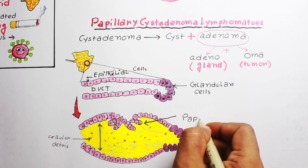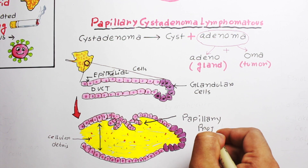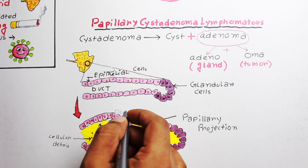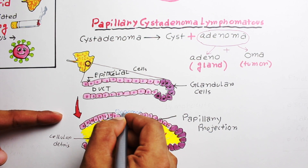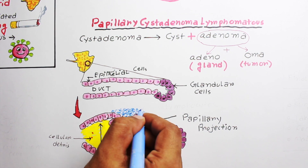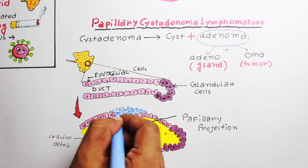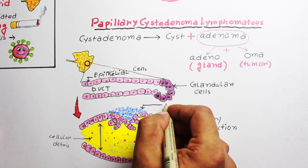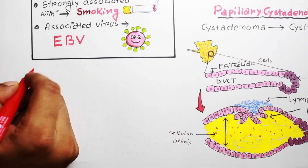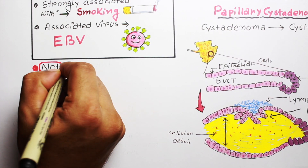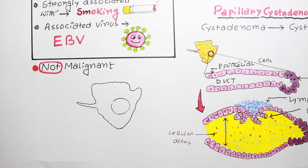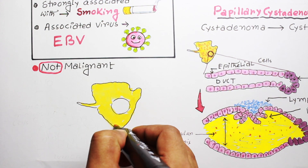'Papillary' means finger-like projections — the epithelial lining grows inside as finger-like projections, and due to this invagination it is called papillary. Lastly, the epithelial lining gets infiltrated by lymphocytes and is supported by a lymphoid stroma that frequently shows germinal center formation — that's why it is called papillary cyst adenoma lymphomatosum.